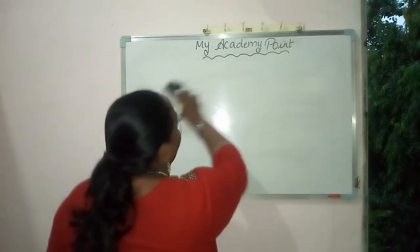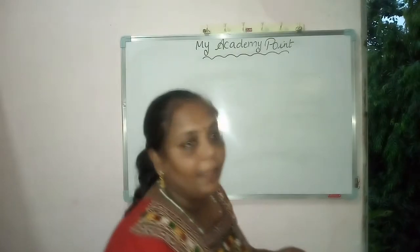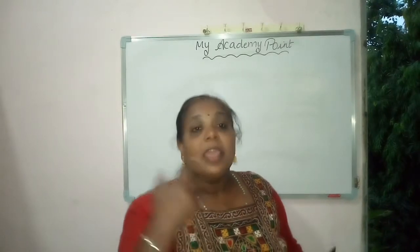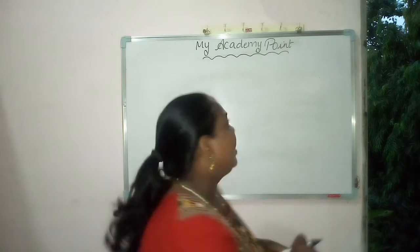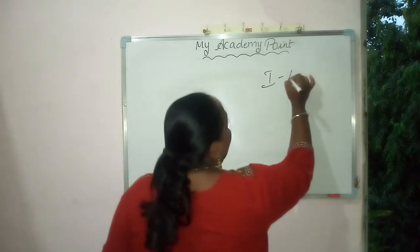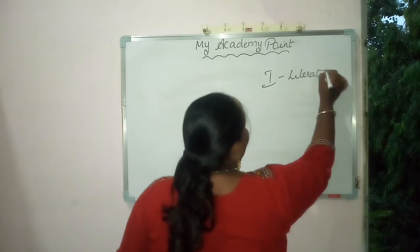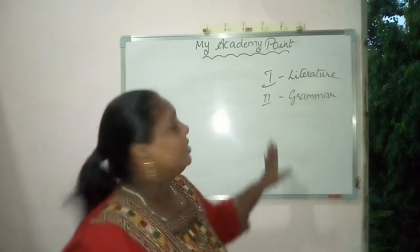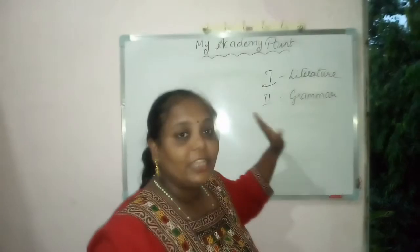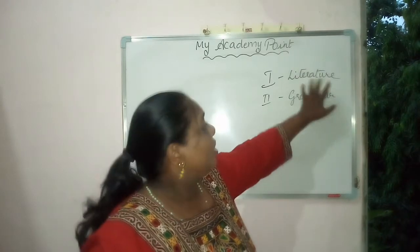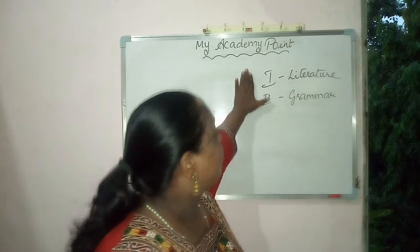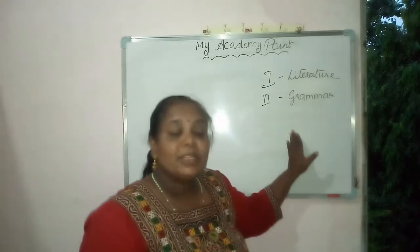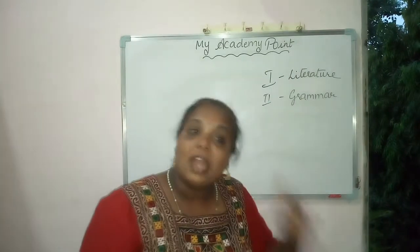Now we will come to the grammar part. In subjects like Hindi, Gujarati, or English, we have two parts. Language one is the literature part, and language two is the grammar part. In both languages — Hindi, Gujarati, or English — we have these two parts: literature and grammar. In some schools both subjects have different books, while in other schools both parts are combined into one subject.